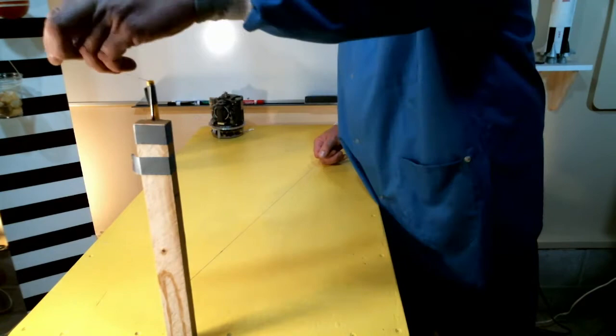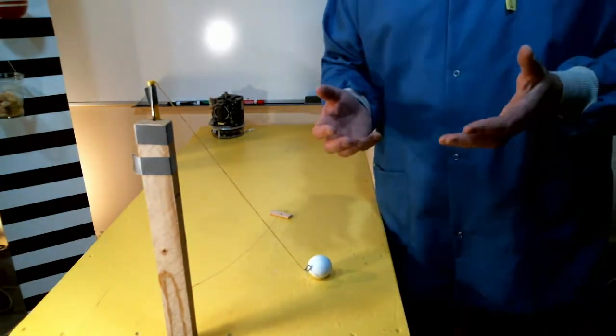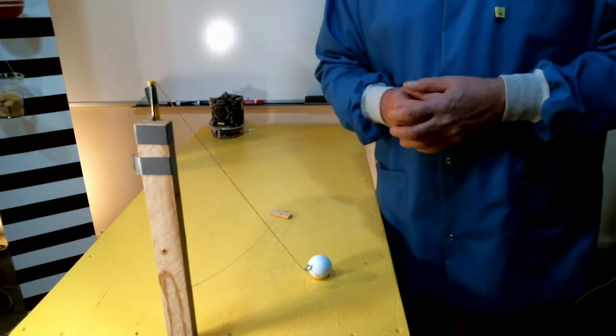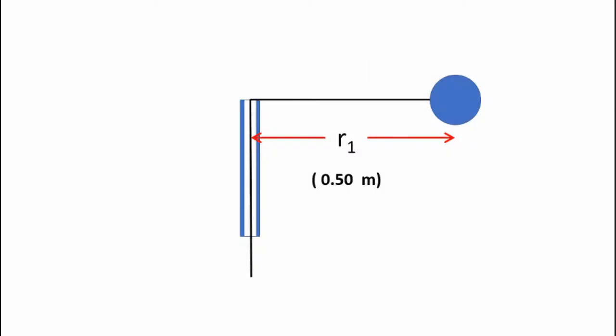Now what this does is allows me to change that radius without introducing any external torques or forces so we can actually test the concept of conservation of angular momentum. All right so here's a simple graphic showing the system once again. Now the blue circle represents the golf ball and the black represents the string. I'm going to start off with the initial radius of r1 which is 0.5 meters for this experiment. Now what I'm going to do is pull on a string and shorten the radius to r2 which is 0.25 meters.